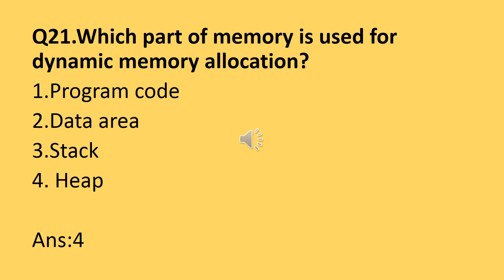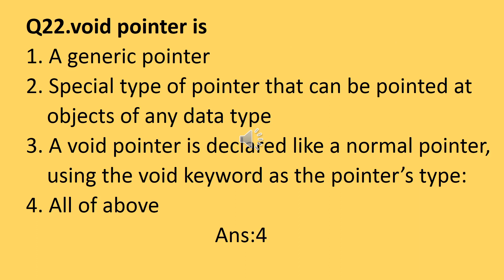Question number twenty-one: which part of memory is used for dynamic memory allocation? The answer is the heap. When a program executes, memory is divided into four parts: the operating system, the program's machine code, a data area where program data is stored, and the stack and heap. The heap is the part where dynamically allocated data is stored, and it also stores information about the location. So the answer is heap.